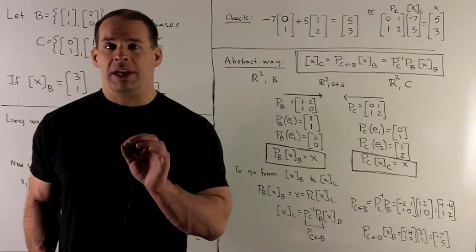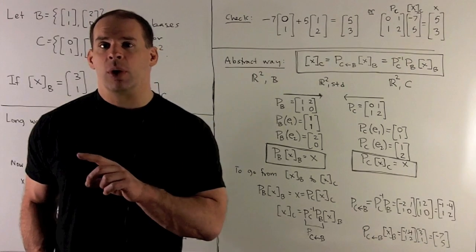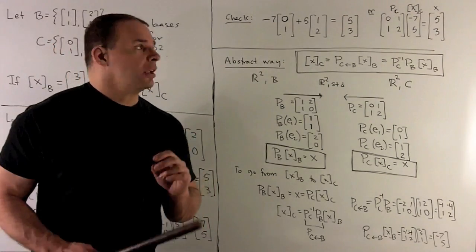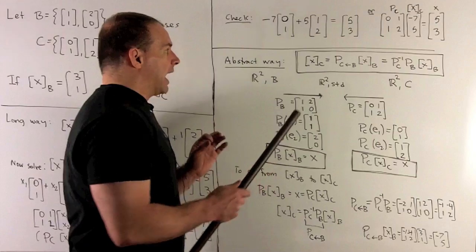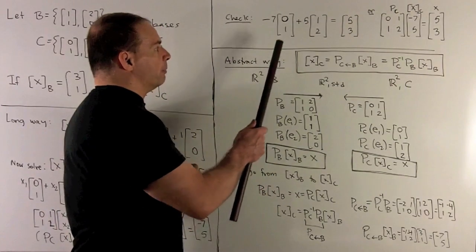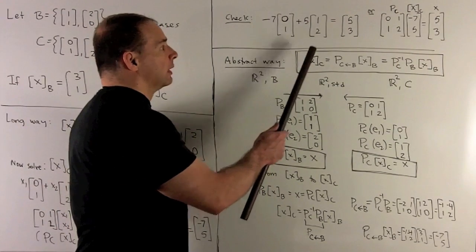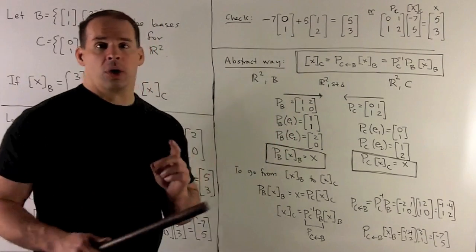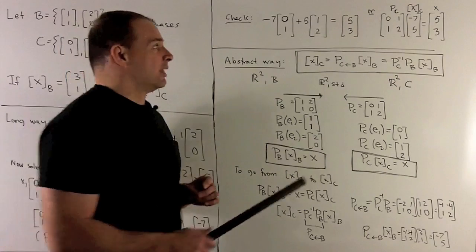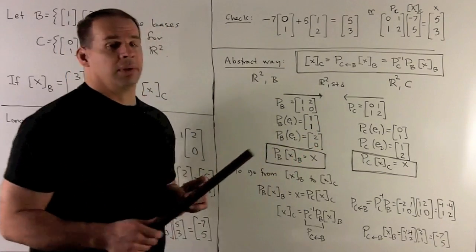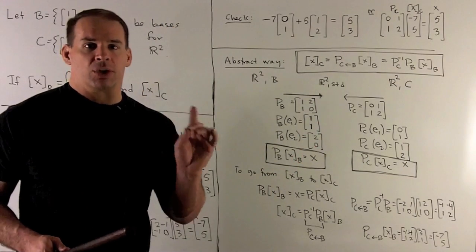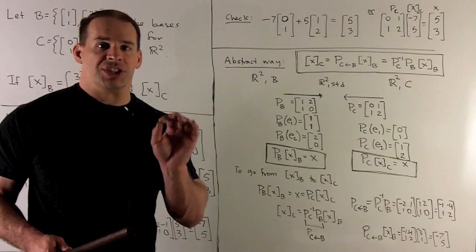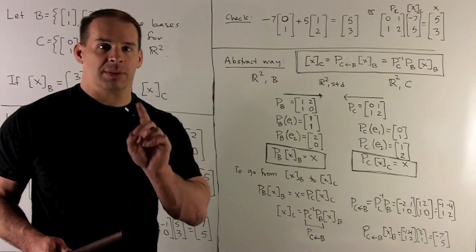The first step is going to be to put our linear combination equation in matrix vector form. Now, if you take a look at what we did with the check, what do we have here? We're going to have basis vector 1 for C, basis vector 2 for C. We have the coefficients for our coordinate vector with respect to C. And then we have X on the other side. So, we put this in matrix vector form. We're going to need a definition first. We're going to call the basis matrix for C, denoted P_C.